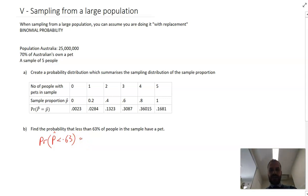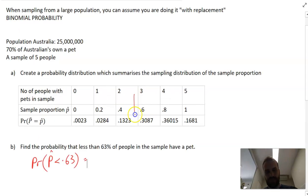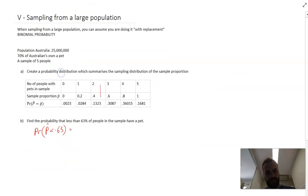Now what's that going to be equal to? Well, that's going to be equal to a sample proportion of zero plus a sample proportion of 0.2 plus a sample proportion of 0.4 plus a sample proportion of 0.6. So it's going to be from there down.